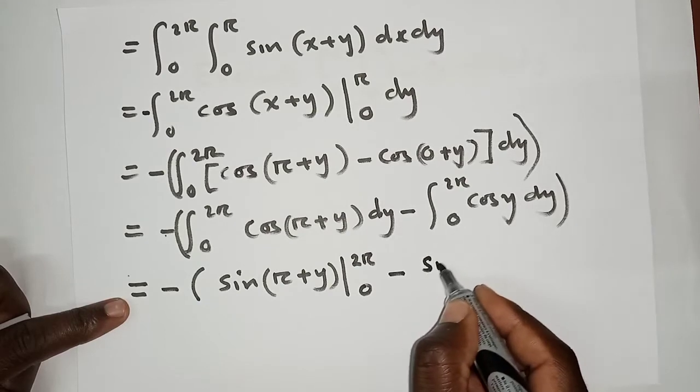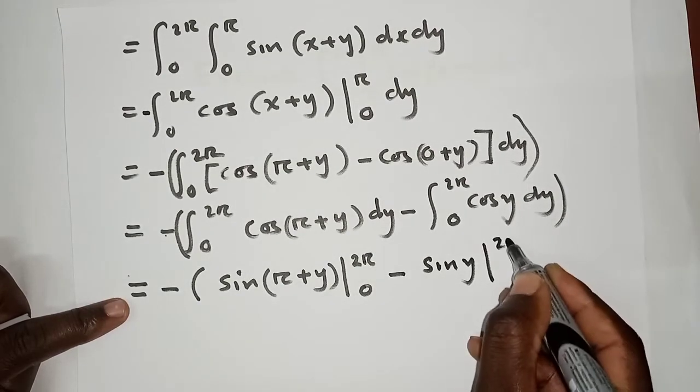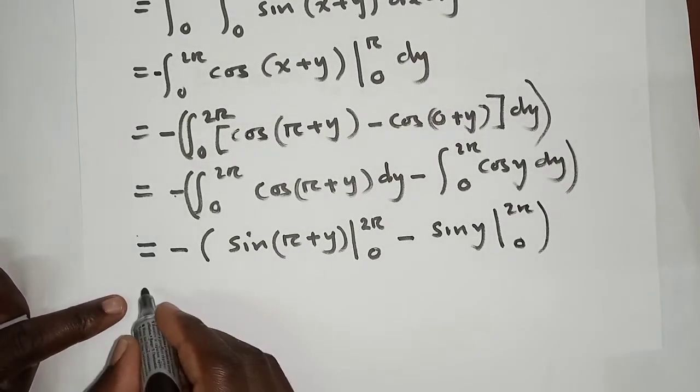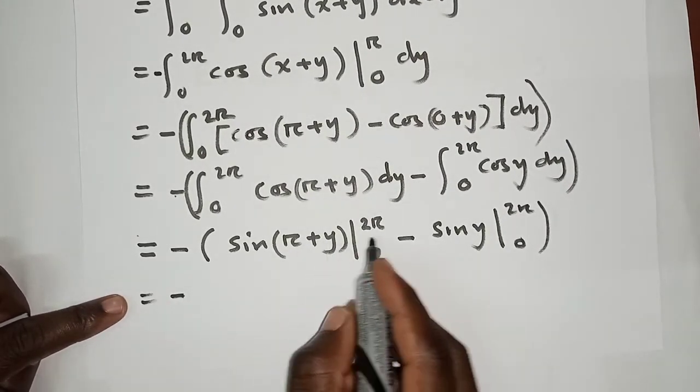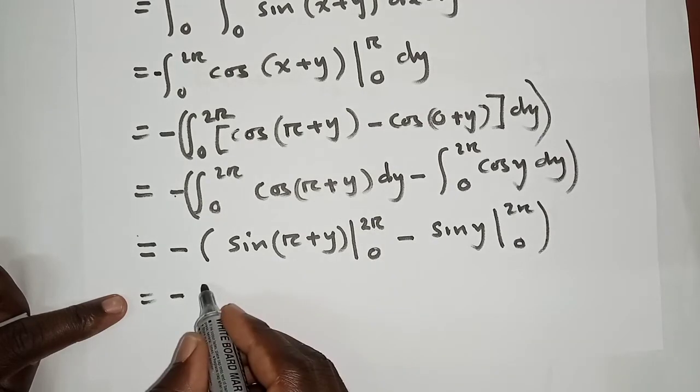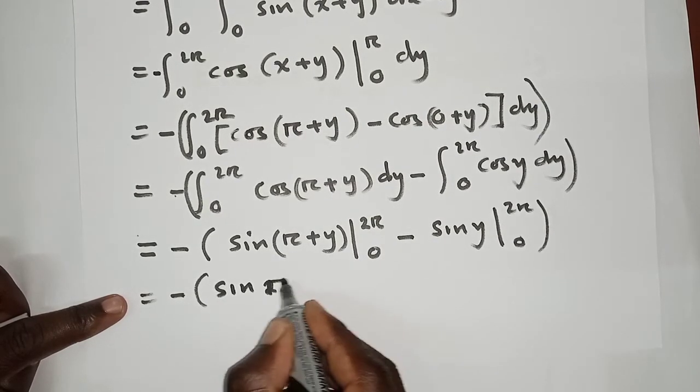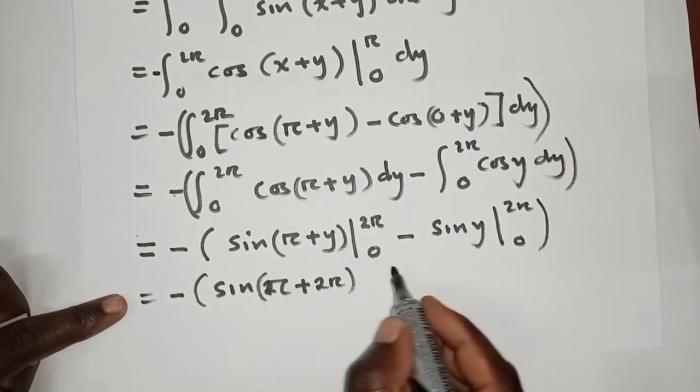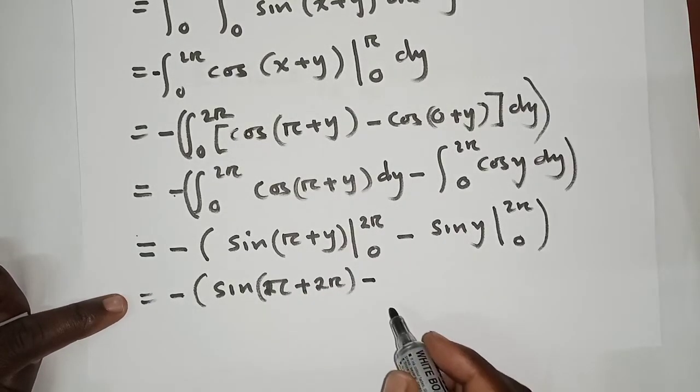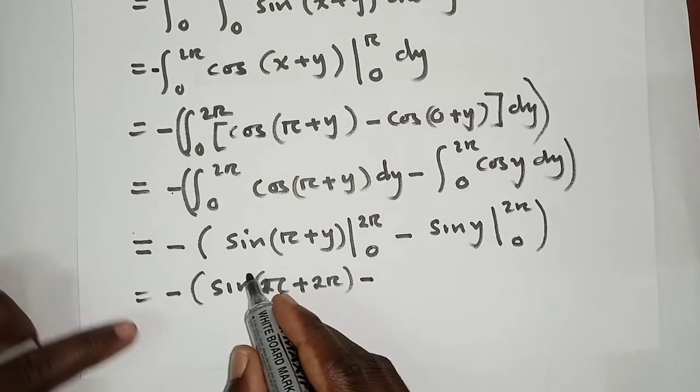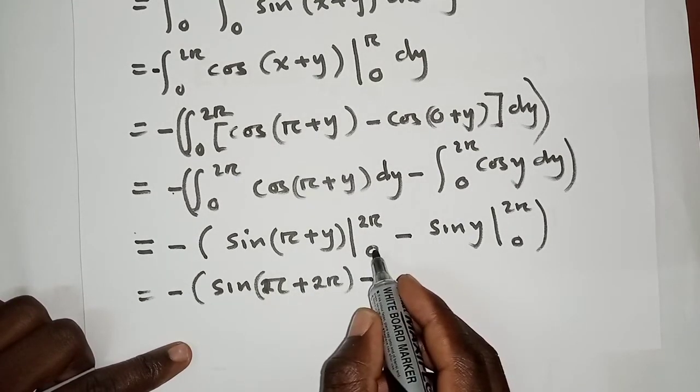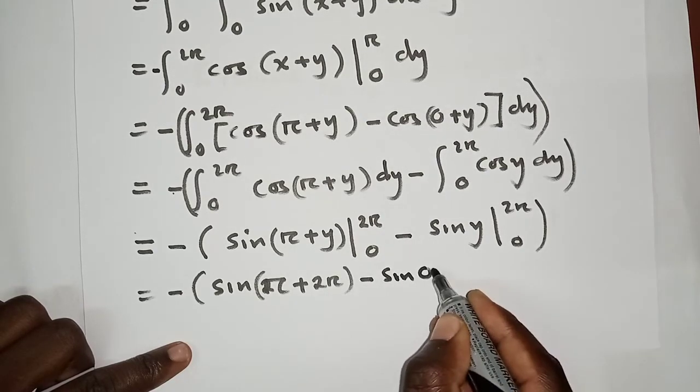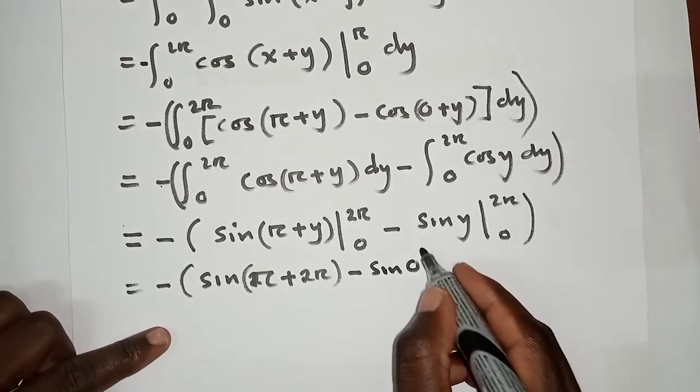So now we can apply the limits. We replace, so we have sine of (pi+2pi) here, minus when we put zero here we just remain with sine zero. So we're done with the first one.